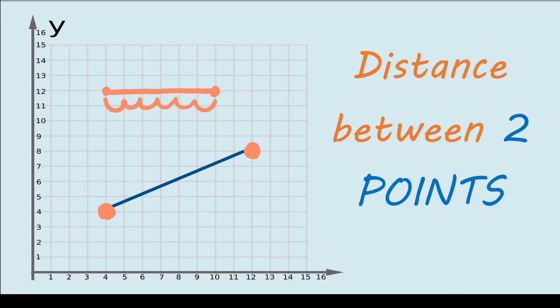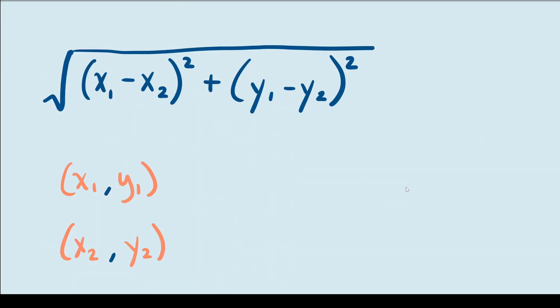But what if you have two points plotted like this, connected by a blue line segment? This isn't as straightforward because while we can still connect both points, we can't just find the length of this line segment because it's slanted. So for cases like this, we use a special formula, which I'll give you right now. This formula gives the distance between any two points connected by a line segment on a coordinate plane.